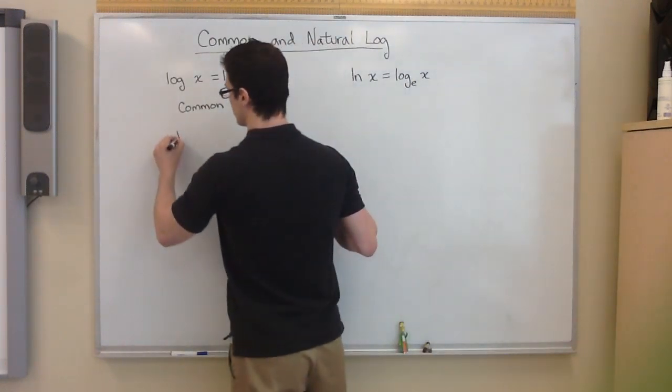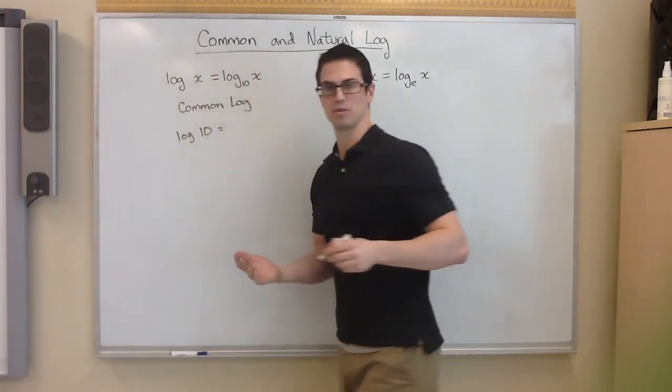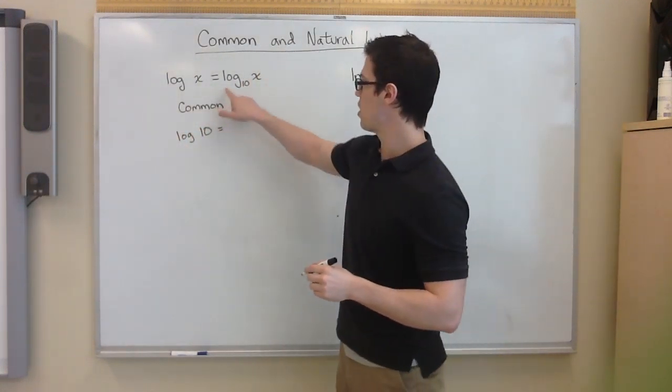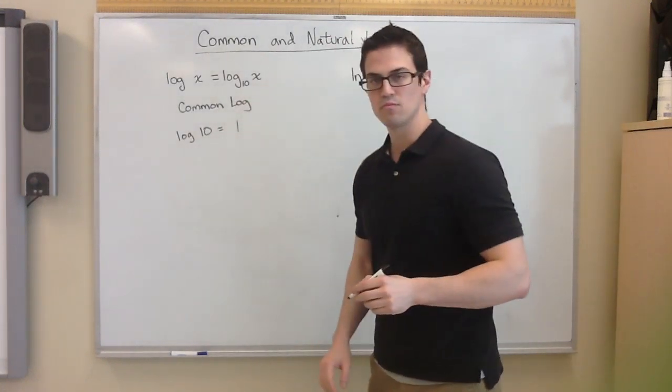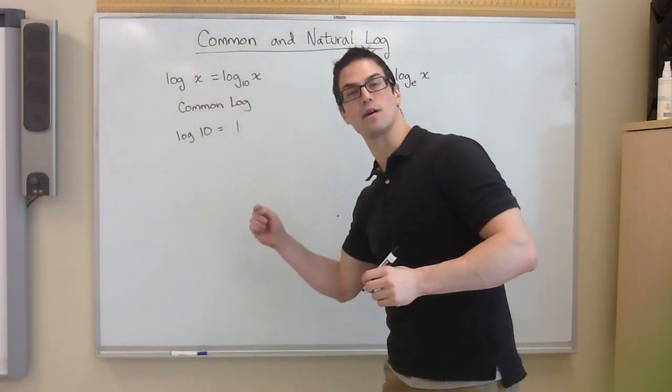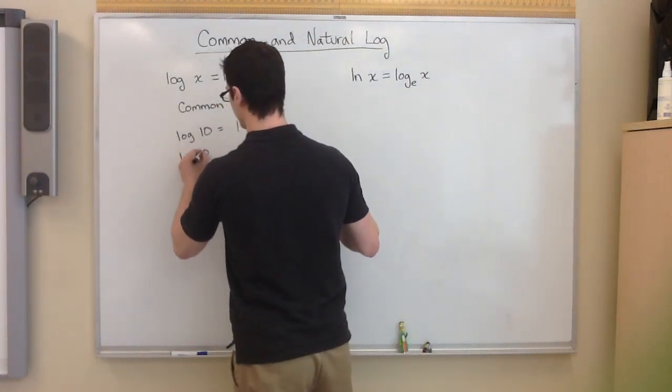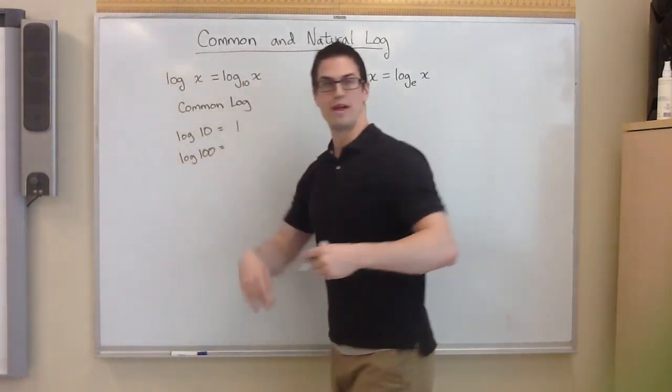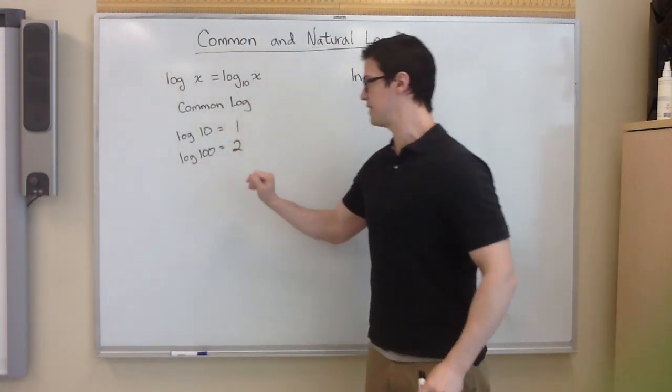So if you ever see where it says log of 10, I just picked a really easy example. It's the same thing as log base 10 of 10, and then you would just say that it's equal to 1, because 10 to the first power is 10. Now if it was log of 100, well you know that 10 squared is 100, so then this would be 2.